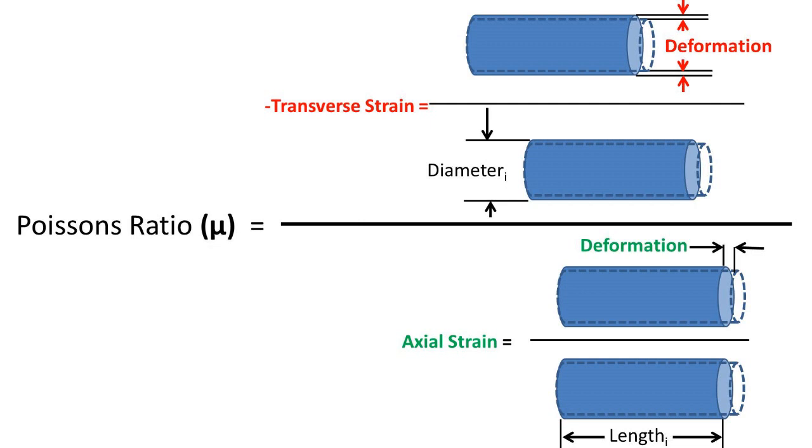The Poisson ratio is the ratio that compares how much the part will expand or contract in the transverse direction versus the axial direction. So if we have the axial strain and the Poisson ratio, we can find the transverse strain. And if we have the transverse strain and the Poisson ratio, we can find the axial strain.